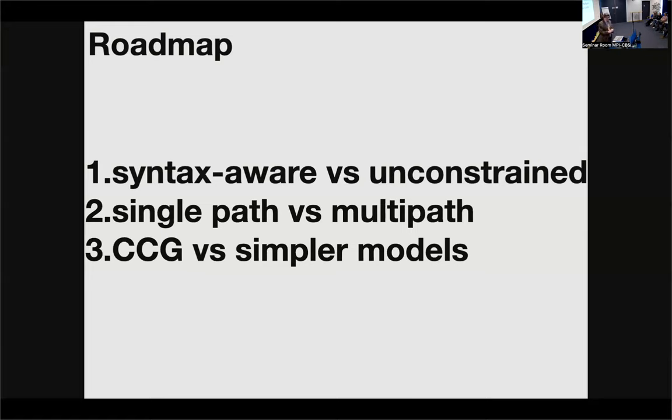Or do we somehow maintain multiple alternative structures as we go through moment by moment language comprehension? That's the point of the second study that contrasts single path parsing with multi-path parsing. The third case study that I want to share with you today compares a particular syntactic theory called combinatory categorical grammar against two simpler alternatives, a sequence-oriented language model and a simpler kind of phrase structure which is hierarchical but doesn't have some of the cool things that expressive grammars like CCG have. Does that, you guys understand basically where we're going today?